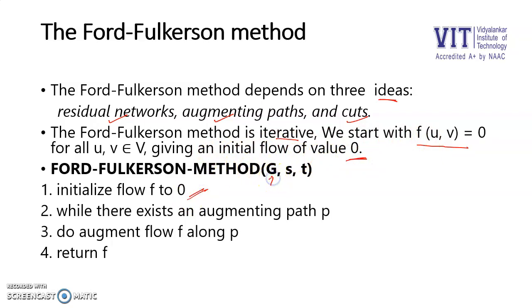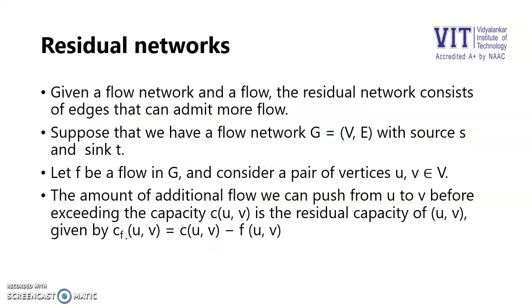What it says is we start with flow from vertex pair U to V as zero—the initial flow is zero. So f is initialized to zero for a given graph from source to T. Now we need to find any augmenting path P if that exists, and we will continue doing so as long as the augmenting path exists. If there exists an augmenting path P, then we will augment the flow f along path P.